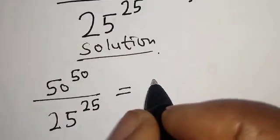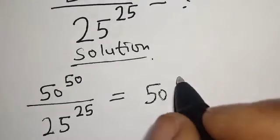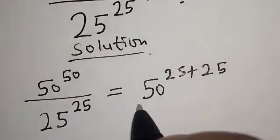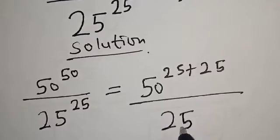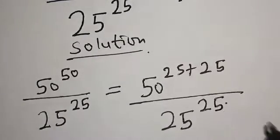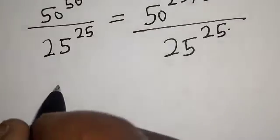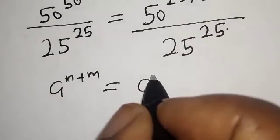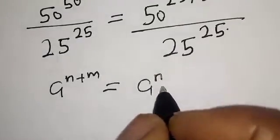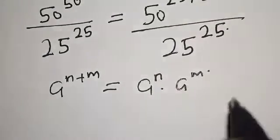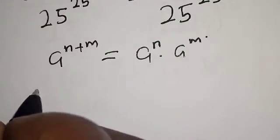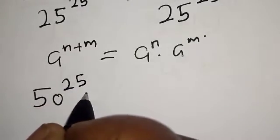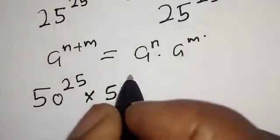This is equal to 50 raised to power 25 plus 25, over 25 raised to power 25. If you have a raised to power n plus m, it is the same thing as a raised to power n multiplied by a raised to power m. Then we have 50 raised to power 25 multiplied by 50 raised to power 25, over 25 raised to power 25.